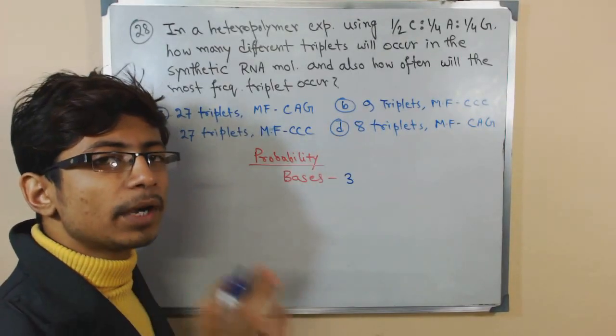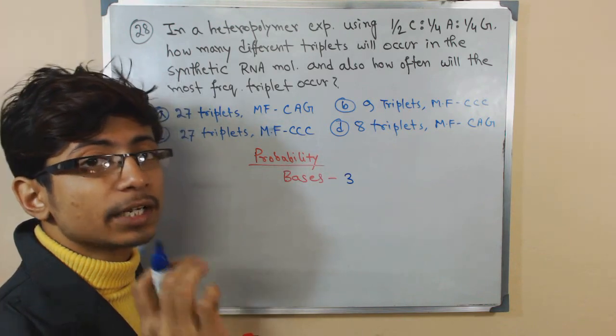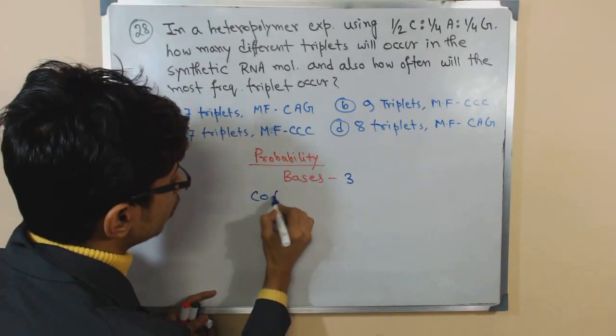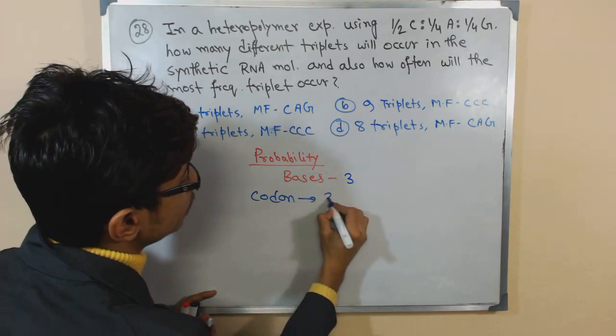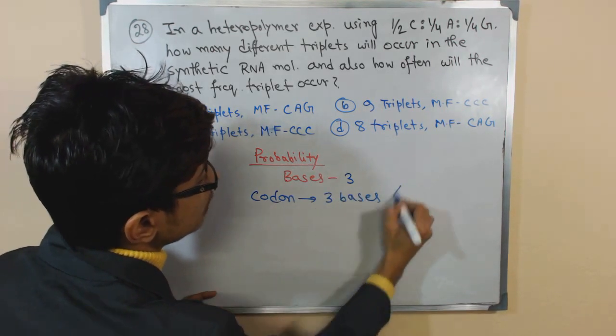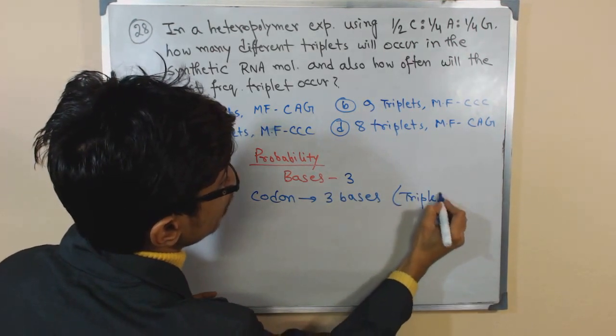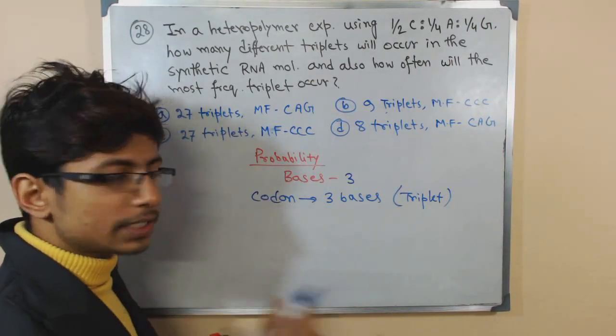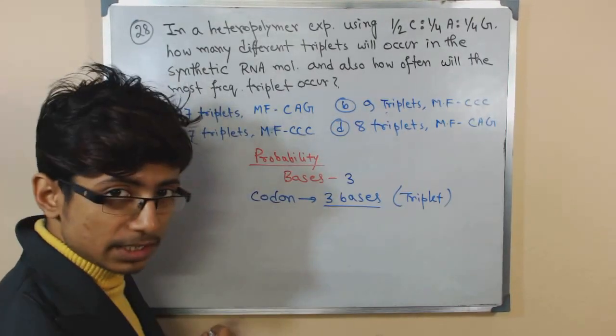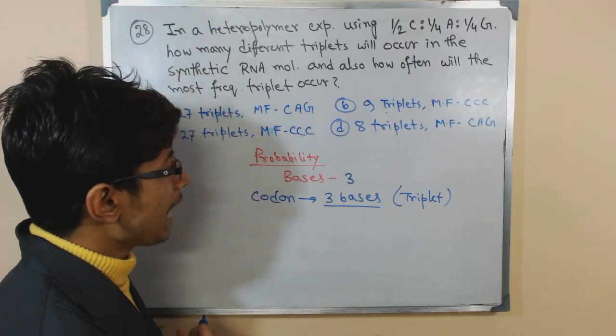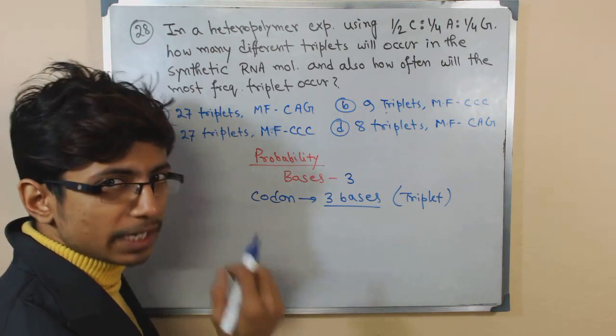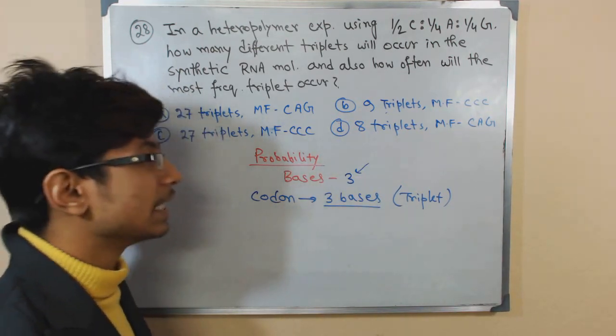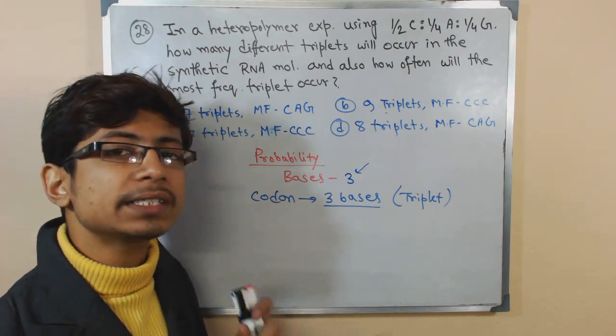What is the number of bases present in a codon that is going to be coded? The codon is consisting of three bases because it is a triplet - we are talking about triplets. So the codon of our interest is a triplet codon, and the type of bases that we have are also three.